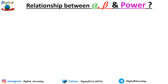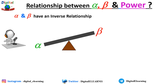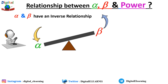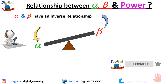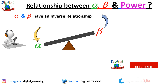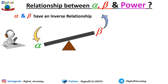Let's look at the relationship between alpha, beta, and power. Alpha and beta have an inverse relationship, meaning as alpha decreases, your beta will increase. That is the common relationship between alpha and beta.